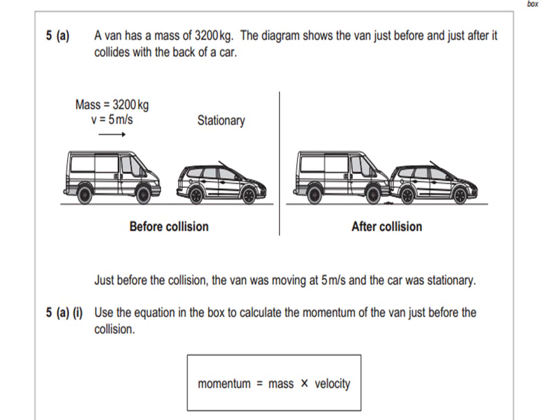Here we've got an exam question on momentum. A van has a mass of 3200 kg. The diagram shows the van just before and just after it collides with the back of the car, as you see in the diagrams.